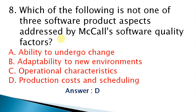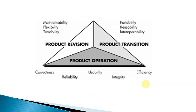Eighth question: which of the following is not one of the three software product aspects addressed by McCall's software quality factors? The correct answer is production cost and scheduling. McCall's quality factors divide software performance into three categories: product revision, product transition, and product operation.